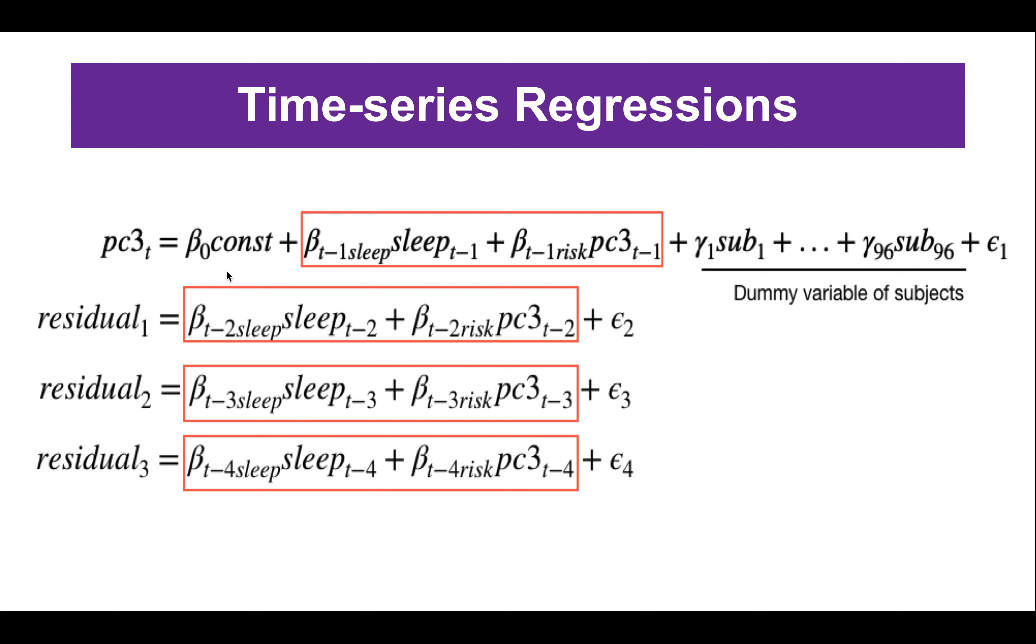In the first regression, we include variables of interest in the past. Here we use the sleep duration time one week ago, and we also include the risk component score one week ago to eliminate the autocorrelation. Finally, we add the subject dummy variables and error terms in this formula.